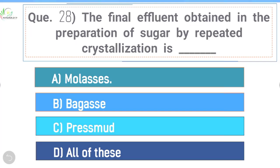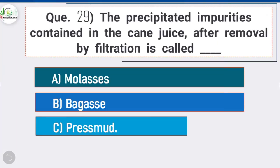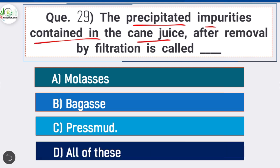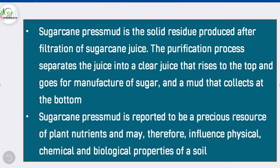Question 29: The precipitated impurities contained in cane juice after removal by filtration is called — option C is correct: press mud. Sugarcane press mud is the solid residue produced after filtration of sugarcane juice. The purification process separates the juice into clear juice (for sugar manufacture) and mud that collects at the bottom. Press mud is a precious resource of plant nutrients and may influence physical, chemical, and biological properties of soil.